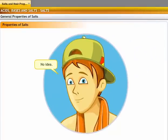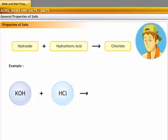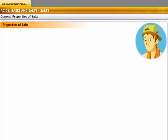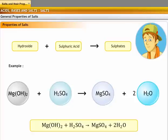Salts usually get their name from the acid which takes part in the reaction. Salts formed from any hydroxide and hydrochloric acid are chlorides. For example, potassium hydroxide reacts with hydrochloric acid to form a salt called potassium chloride. Similarly, salts formed from any hydroxide and sulfuric acid are called sulfates. For example, magnesium hydroxide reacts with sulfuric acid to form magnesium sulfate.